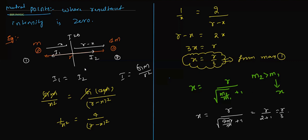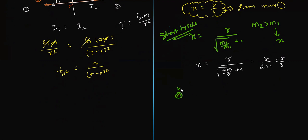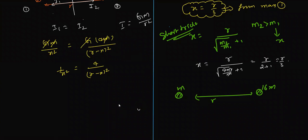Here's a shortcut trick: x = r / (√(m2/m1) + 1), where m2 > m1 and x is measured from m1. Verifying: x = r / (√(4m/m) + 1) = r / (2+1) = r/3. Homework question: masses M and 16M separated by distance r — find the neutral point distance from mass M.